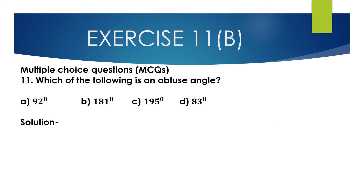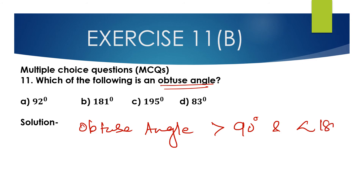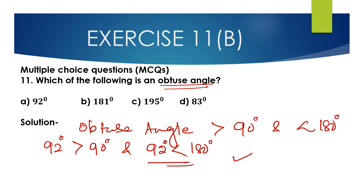Question number 11: Which of the following is an obtuse angle? Options are 92°, 181°, 195°, and 83°. An obtuse angle is more than 90° and less than 180°. Here, 92° satisfies this condition. The other options are either more than 180° or less than 90°. So option A — 92° — is the correct option.